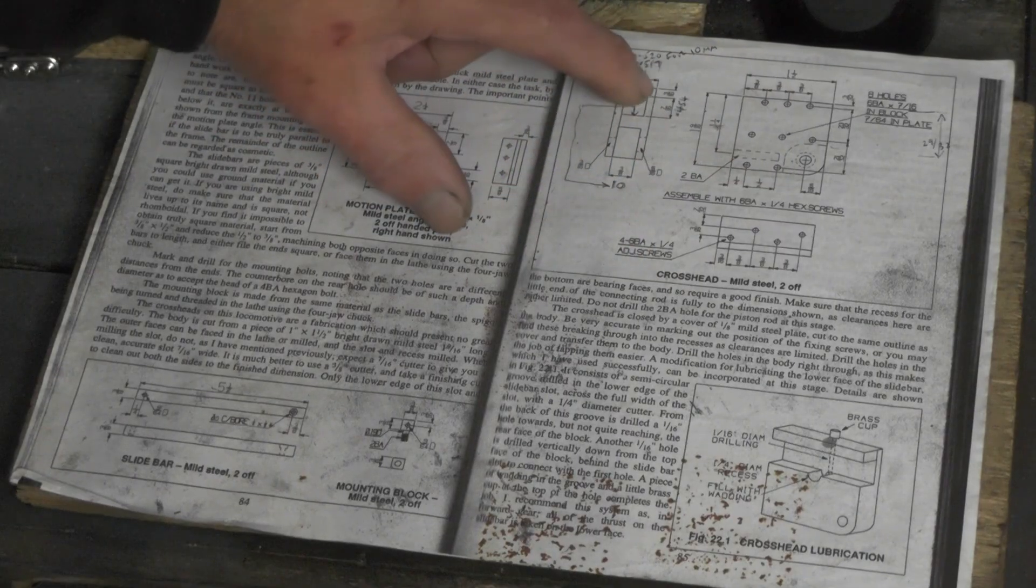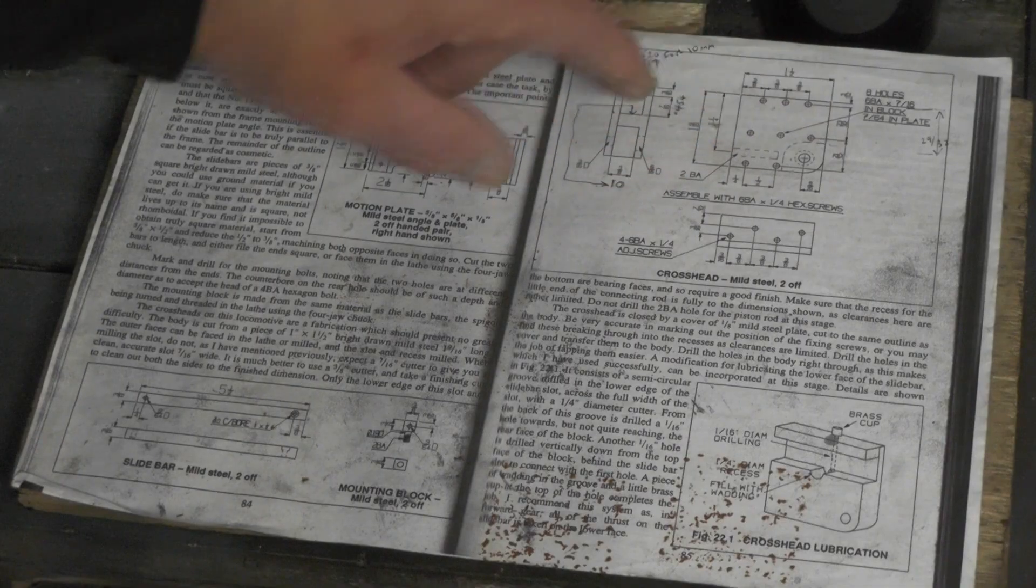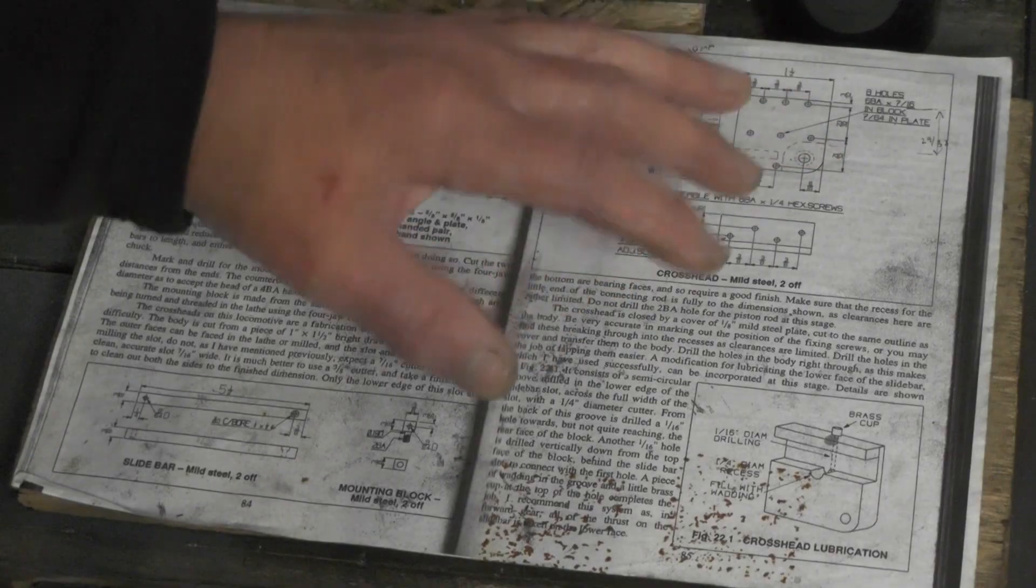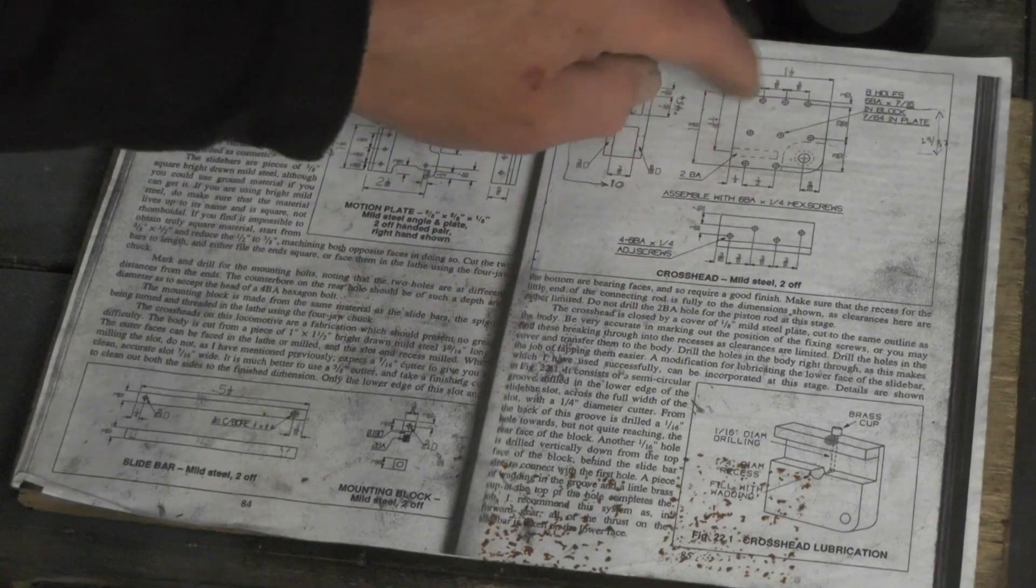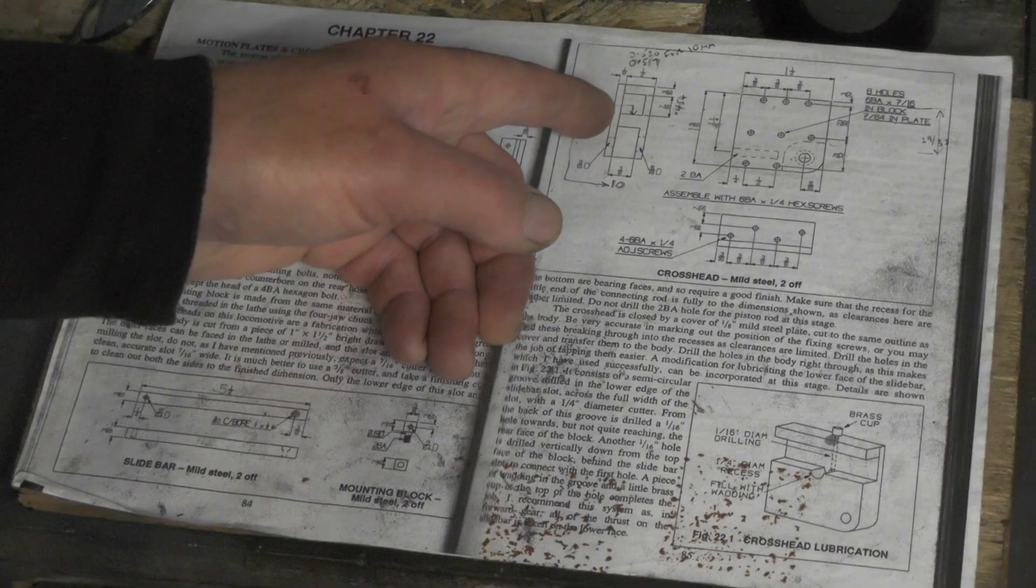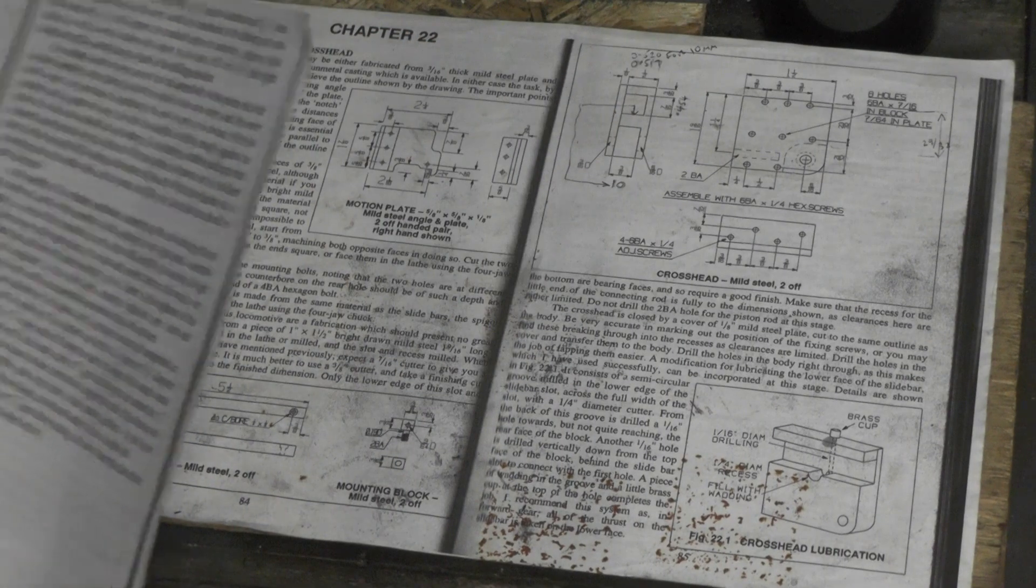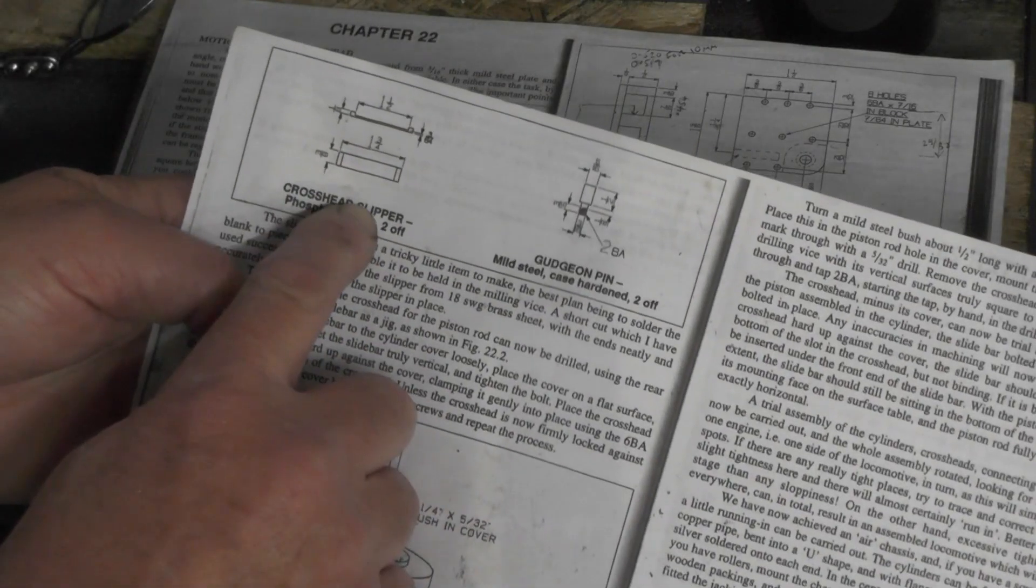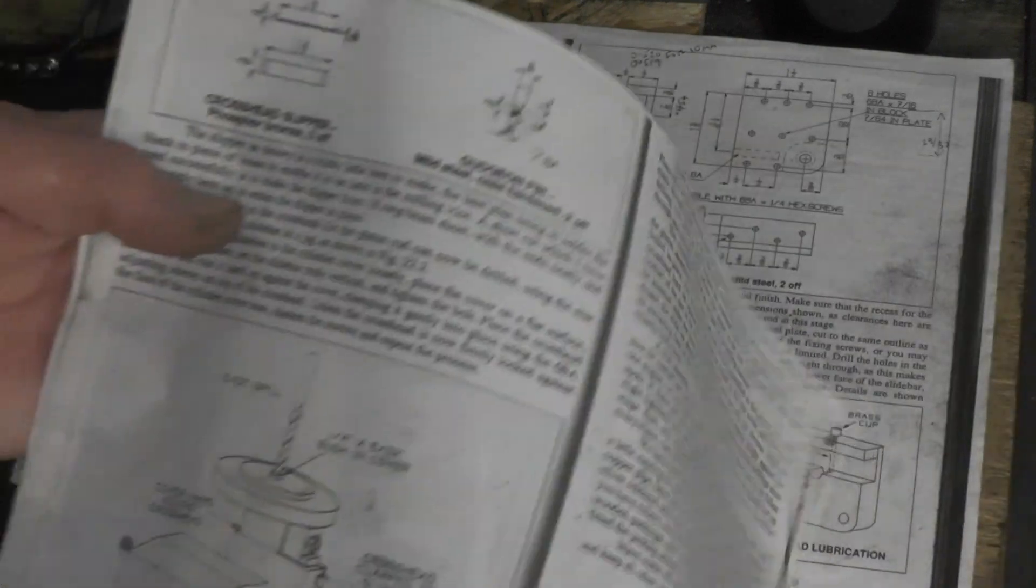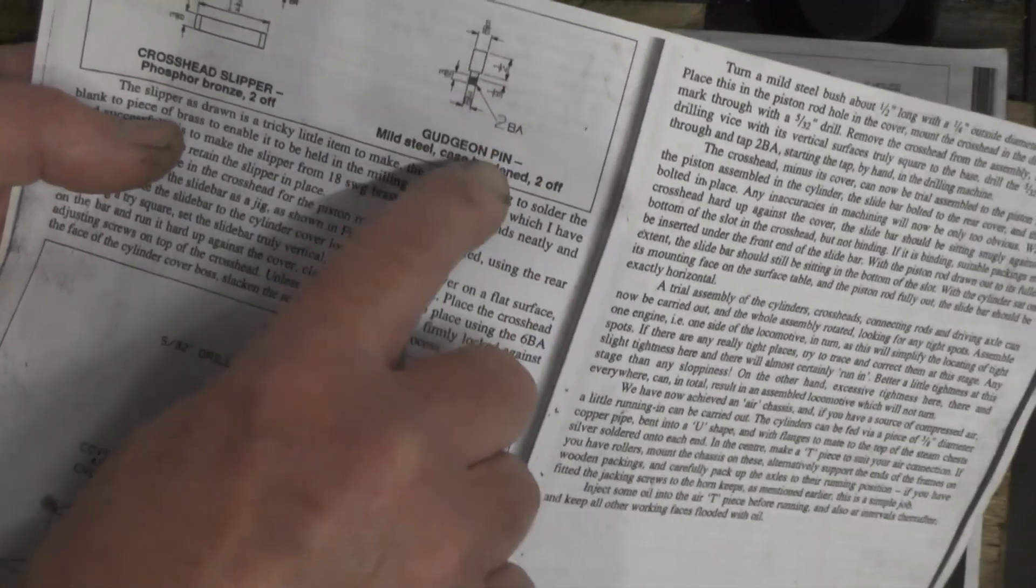So on the block then you cut a slot in, right the way through. And then on one corner you've cut a radius out. And once you've done all that machining, you put the holes in and so forth. There's a plate fits on the top to encapsulate the slide bar. The other two items that's required is the slipper. It's for the bearing surface which fits on the top of the slide bar. And two gudgeon pins which will machine up then harden.